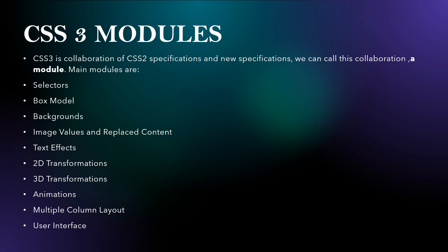CSS3 modules are a combination of CSS2 specifications and new specifications. The main modules are: selectors, box model, backgrounds, image values and replaced content, text effects, 2D transformations, 3D transformations, animations, multiple column layout and user interface.